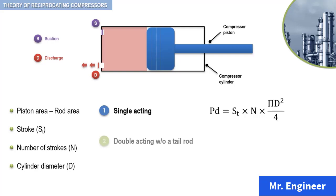For a double acting cylinder without a tail rod, you can use the following equation. Here, the small d is the piston rod diameter.